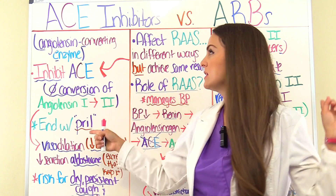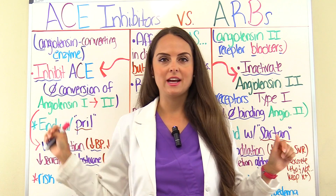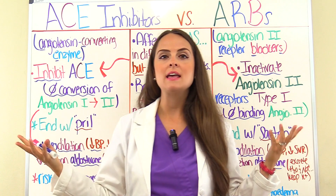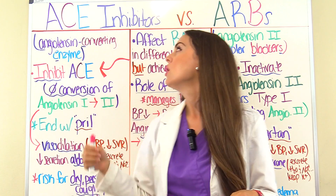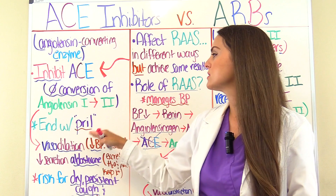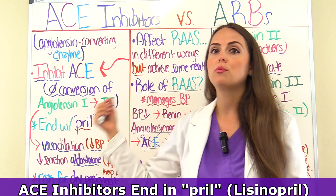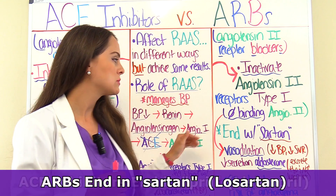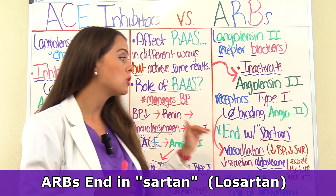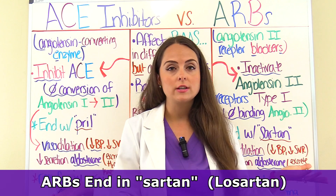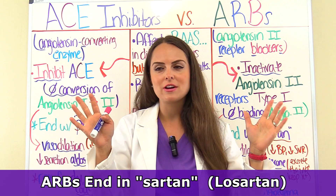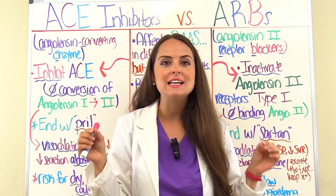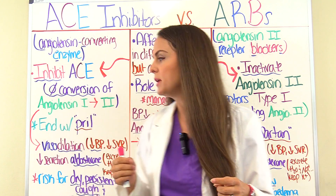Some things you want to remember to help differentiate between them is how their generic name ends. With ACE inhibitors, the generics are going to end with '-pril,' like lisinopril. With ARBs, the generics will end with '-sartan,' like losartan. So when you're looking at the meds and trying to determine if this is an ACE or an ARB, look at the ending of those generic names — it'll really help you.